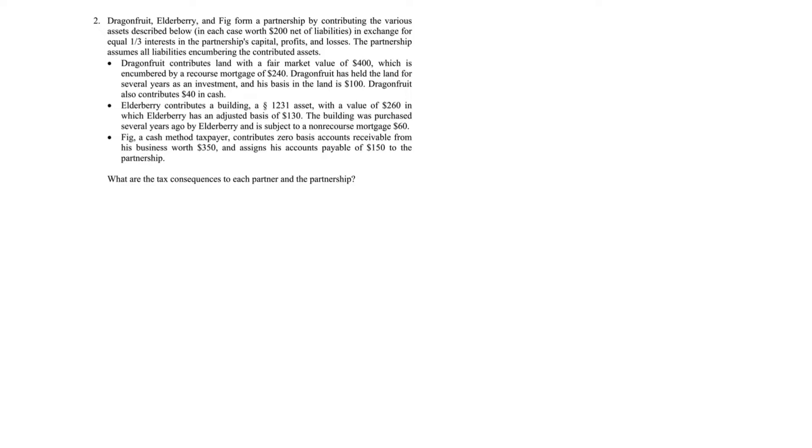F contributes zero-basis accounts receivable and zero-basis accounts payable. The question asks for the tax consequences to each partner and the partnership. We're dealing with partnership tax on formation, and because partners are contributing property in exchange for a partnership interest, Section 721 provides a non-recognition rule — no gain or loss is recognized by the partners or the partnership.